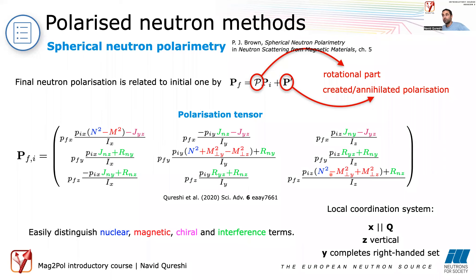Experts in polarimetry would calculate polarization matrices for different models, compare them with observed data, and determine which model is compatible. But without any model even experts had trouble finding a solution, which was exactly the situation I was in back in 2015.